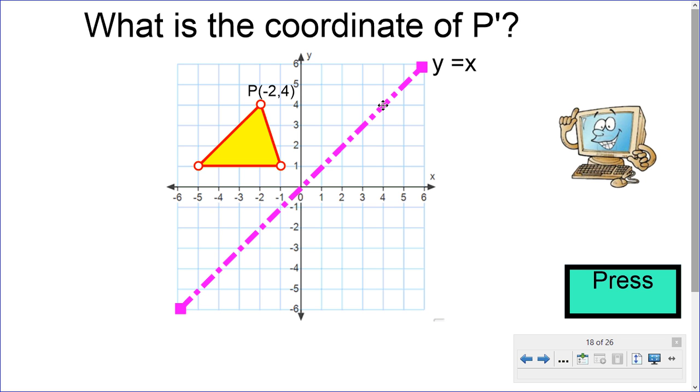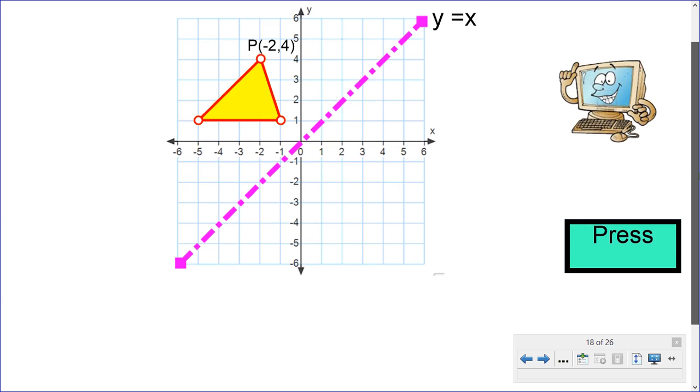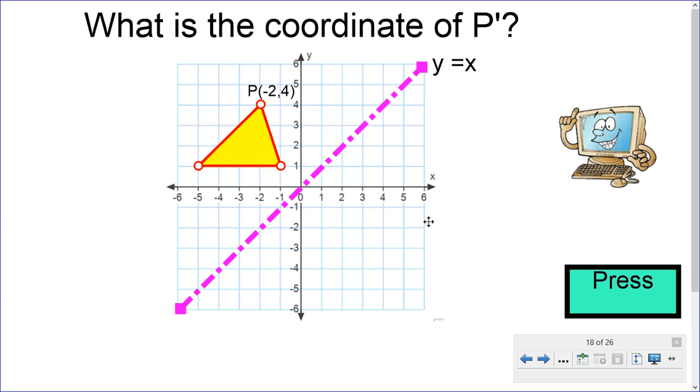Now, just count down six spaces away from that line. One, two, three, four, five, six. And you end up at four, negative two. Let me write that down there. Four, negative two. And that's where point P prime will be.